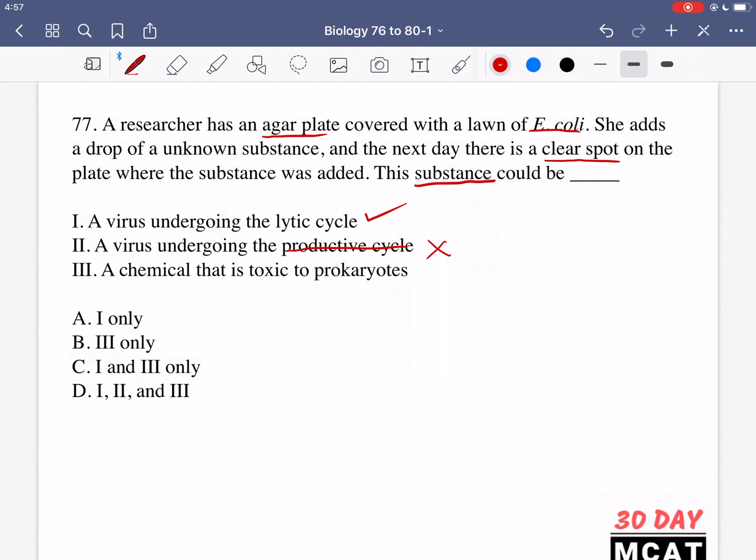And finally, option 3 is saying a chemical that is toxic to prokaryotes. Yes, this is something which could be true. So, C is our correct answer for question 77.